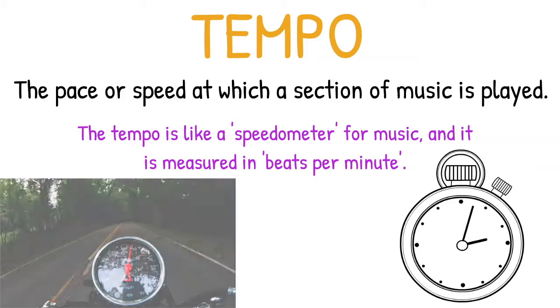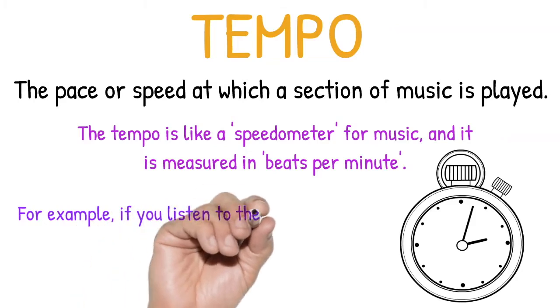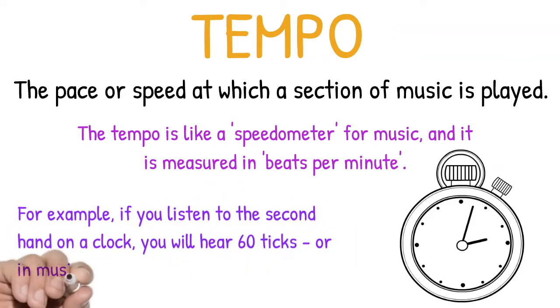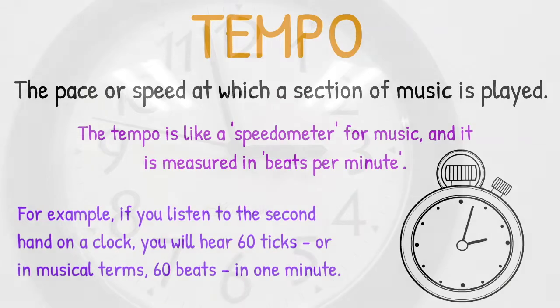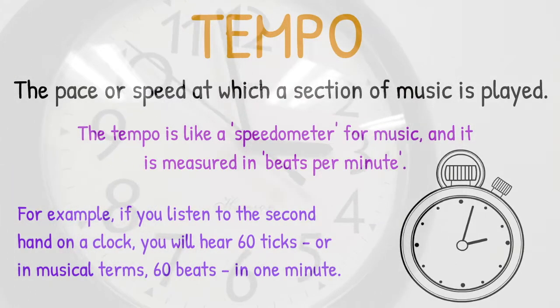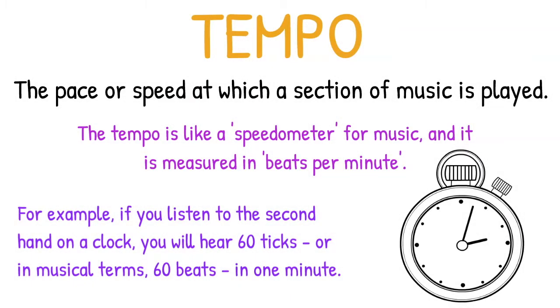That can sound complicated, but think about a clock. If you listen to the second hand on a clock, you will hear 60 ticks — or in musical terms, 60 beats in one minute. The tempo can have virtually any amount of beats per minute. The lower the number of beats per minute, the slower the tempo will feel. Inversely, the higher the number of beats per minute, the faster the tempo will be.